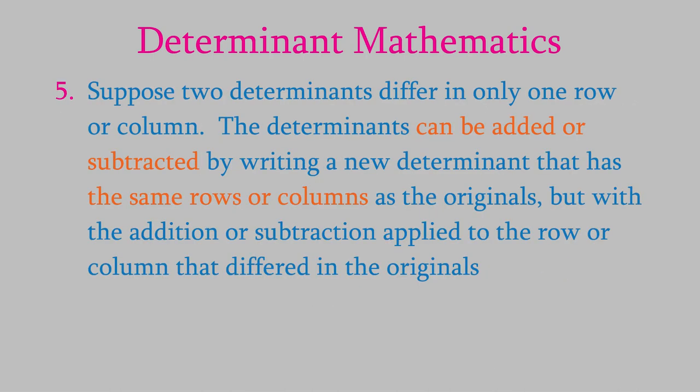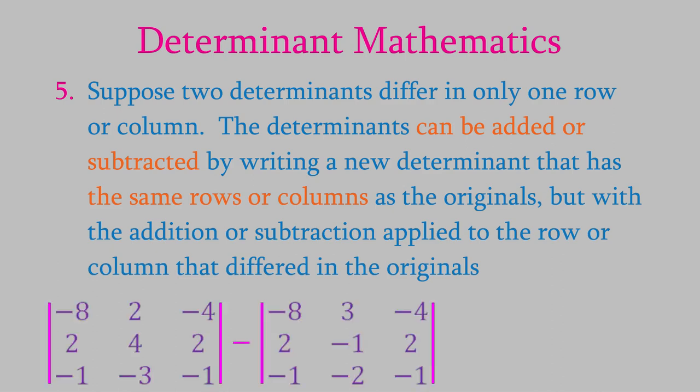For the fifth rule, suppose we have two determinants and only one row or column is different between them. In that case, we can add or subtract the determinants. The resulting determinant will have the same rows or columns that are identical in the two originals, and the remaining row is the sum or difference of the ones in the originals. For example, here are two determinants identical except for the second column. Subtracting the second from the first gives a new second column of negative one, five, and negative one.